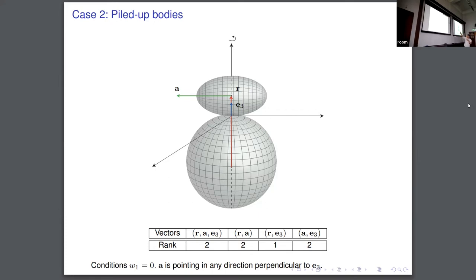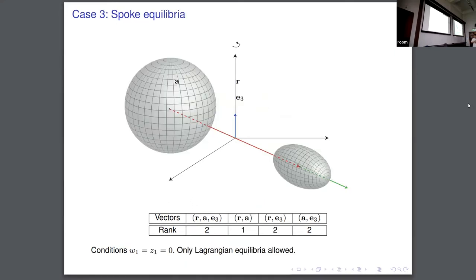In this case, the vector giving the orientation of the ellipsoid is pointing in any direction which is perpendicular to the position vector. And then now we move to the cases in which we see that we have certain natural constraints — they are not all freely put together. And for this case, we have that the position vector and the axis of the body are in the same line.